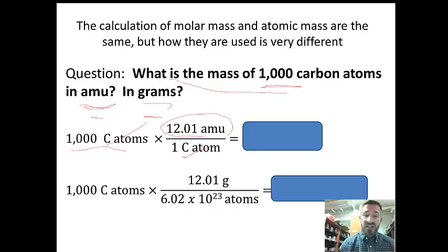The second part is how do you do this in grams. You'd still start with the carbon atoms, but now if we're going to grams, we have to use Avogadro's number here. We have to know there's 6.02 times 10 to the 23rd atoms in a mole.